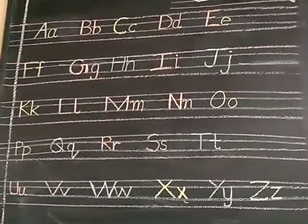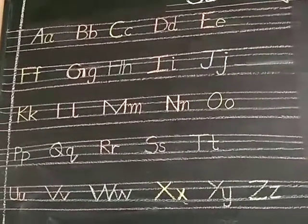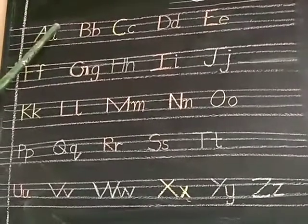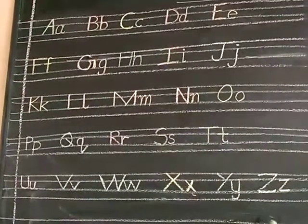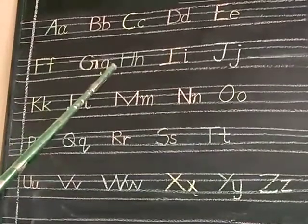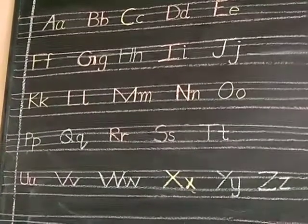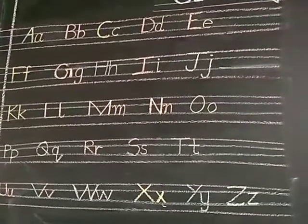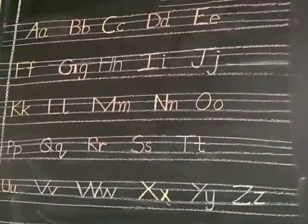So children, already you have learned alphabet A to Z. Isn't it? Capital letter A and small letter A, A to Z. Already you know there are 26 letters in alphabet family. In these 26 alphabets, you have learned vowels and consonants.